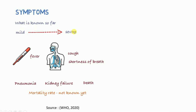The symptoms of the 2019 novel coronavirus range from mild to severe. Mild symptoms include fever, cough, and shortness of breath, while severe symptoms include pneumonia, kidney failure, and can ultimately lead to death. The exact mortality rate is yet to be determined, but based on current data it is said to be above 2%.